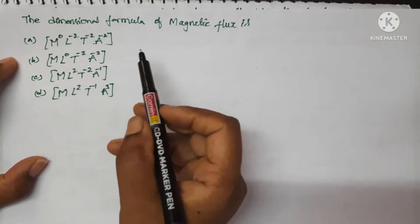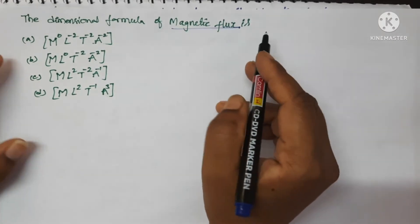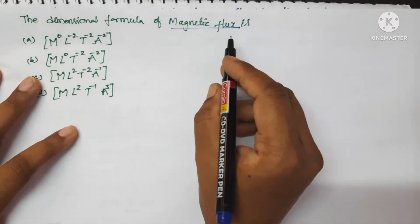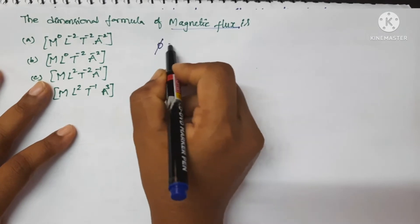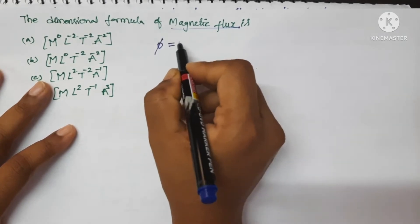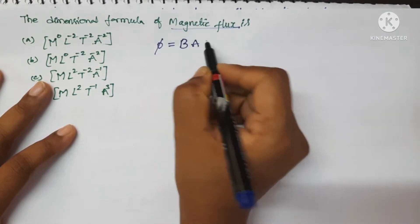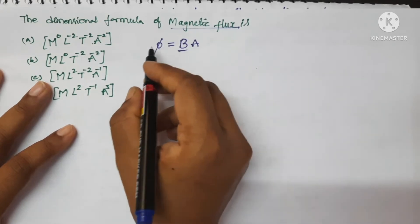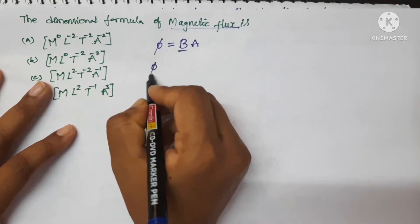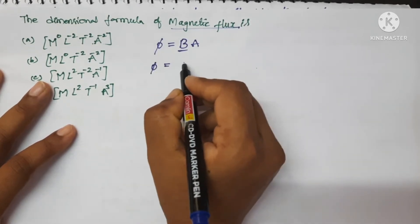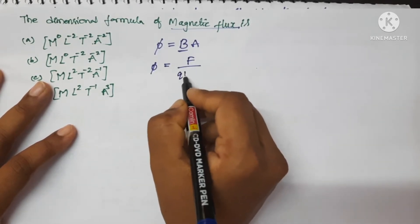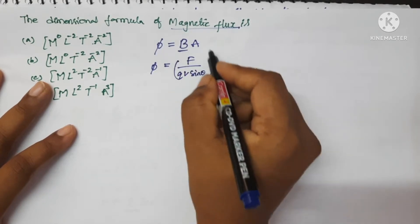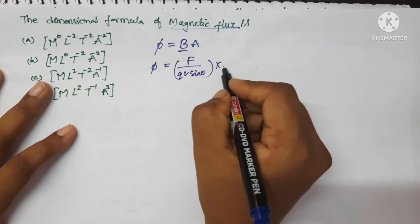The dimensional formula of magnetic flux is — let us write the formula for magnetic flux: φ = B × A, where B is the magnetic field. Now write the formula for that. F upon qv sinθ is the formula for B, and A here is area.